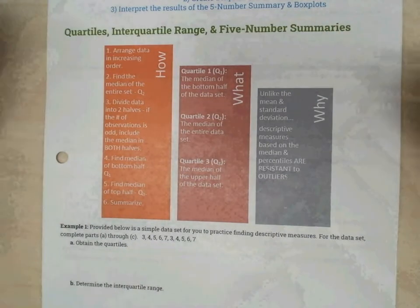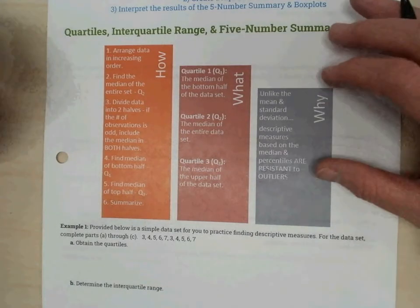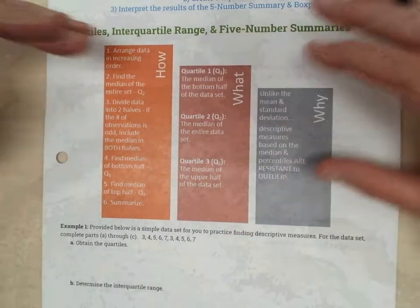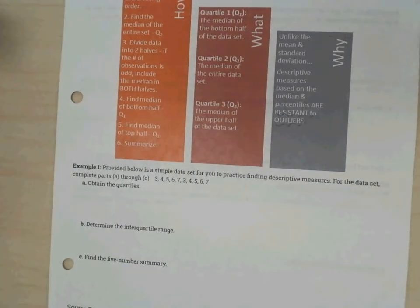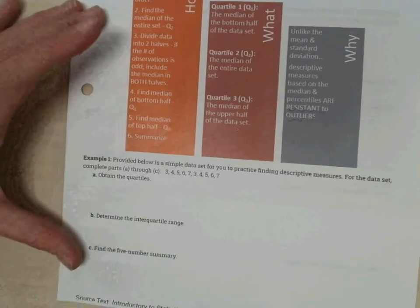We're basing this summary of our data on the median, which is resistant to outliers. Example one: provided below is a simple data set for you to practice finding descriptive measures. Complete parts A through C. Step one to finding the quartiles, line them all up from least to greatest. So go ahead and line those all up, write them in order.